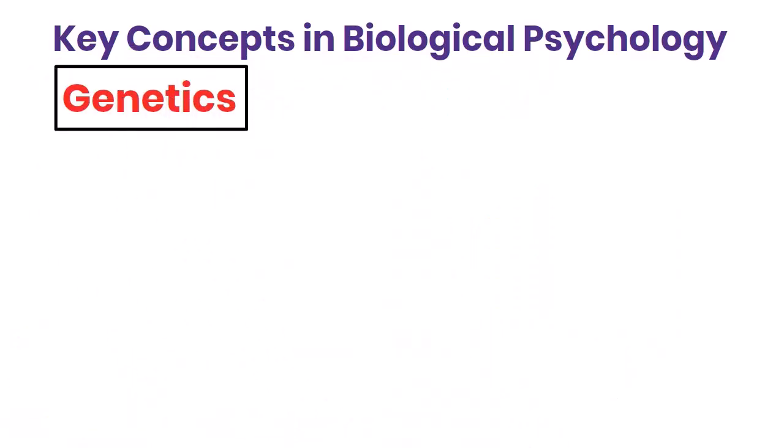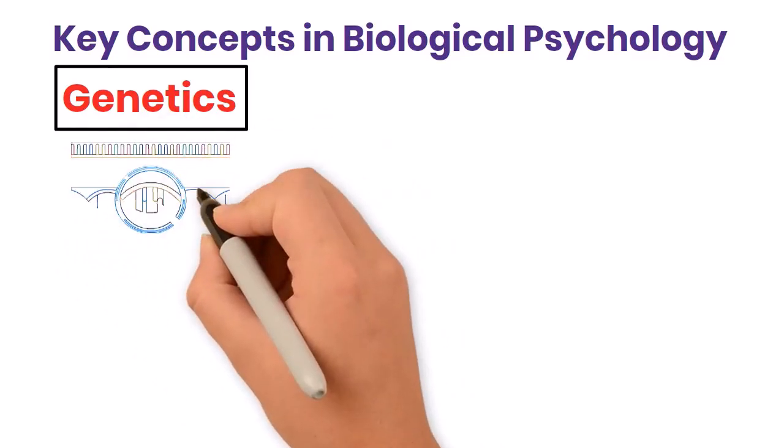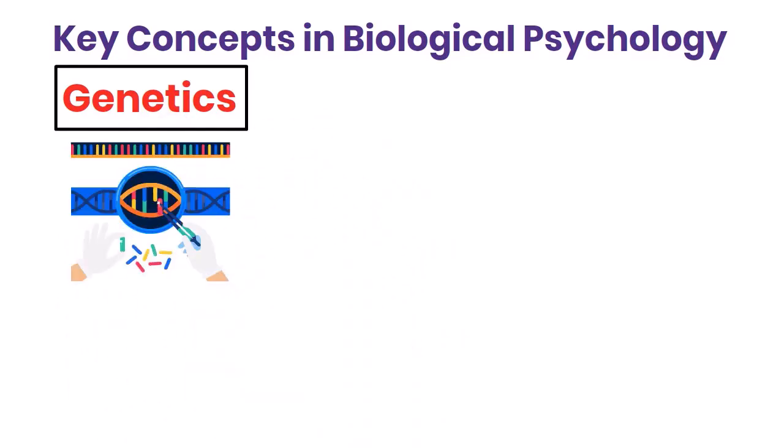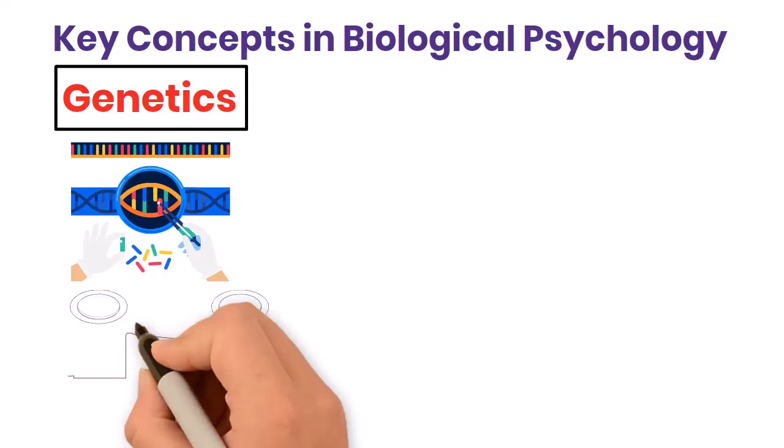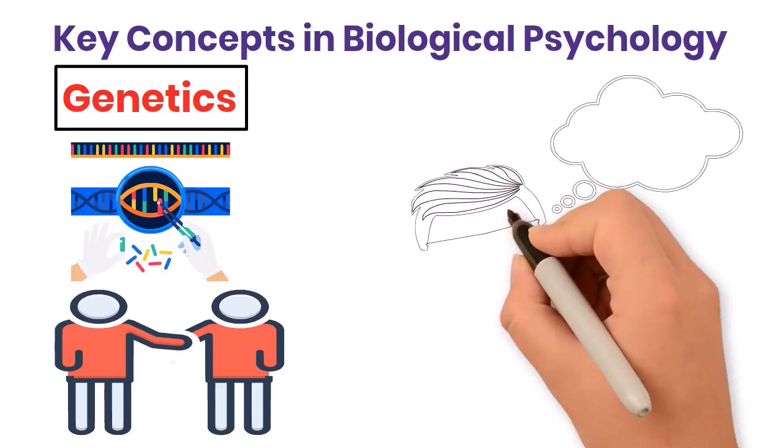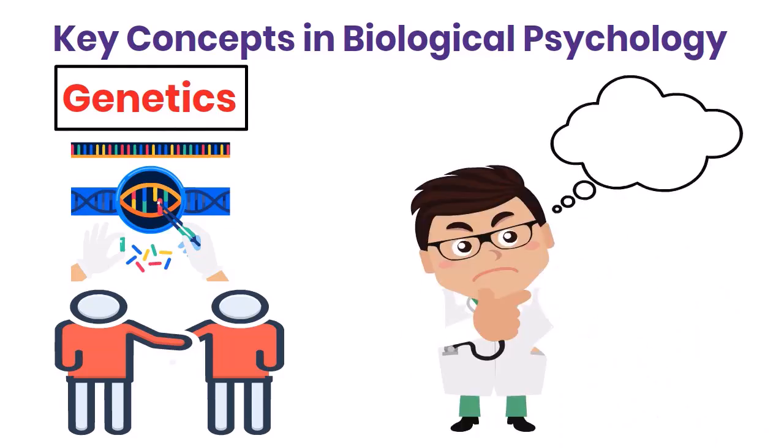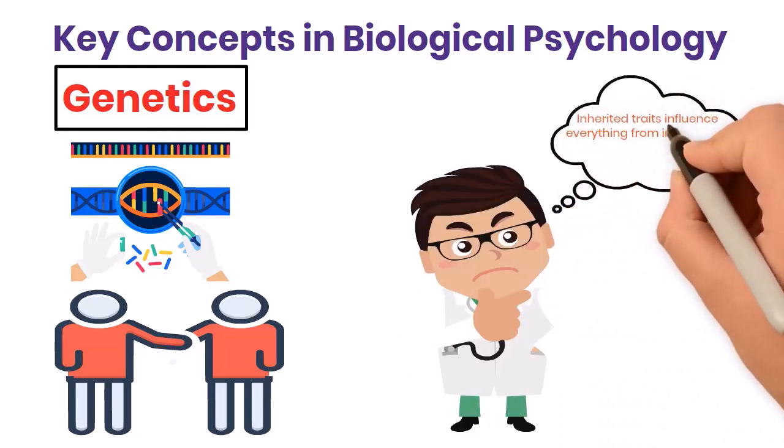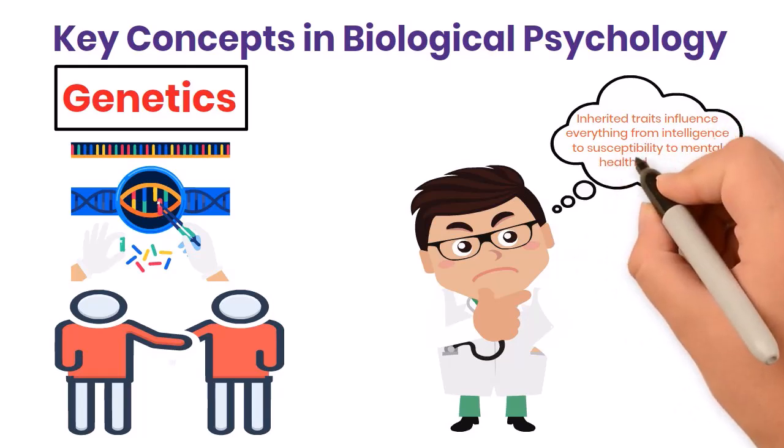Another key concept is genetics. Our genes can play a significant role in shaping behavior. For example, studies on twins and families have shown that many traits and behaviors have a genetic component. By examining the role of genetics, biopsychologists can understand how inherited traits influence everything from intelligence to susceptibility to mental health disorders.